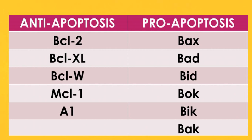There is a good memory technique to remember the anti-apoptotic proteins. When you go to a shopping mall to purchase garments, they come in various sizes: XL (extra large), L (large), M (medium) — note that W turned upside down is M. Finally, all shopping items go into a shopping bag. So remember the clothing sizes XL, L, M and a bag — these map to BCL-XL, BCL-2, MCL-1, and A1.